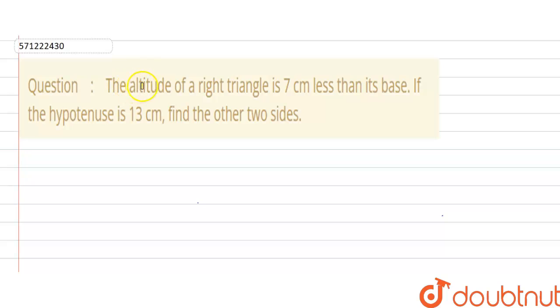Hello guys, the question is: the altitude of a right triangle is 7 cm less than its base. If the hypotenuse is 13 cm, find the other two sides.